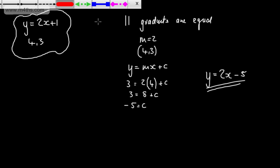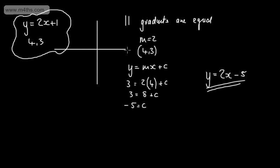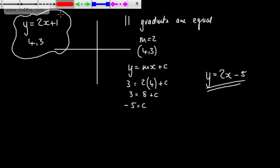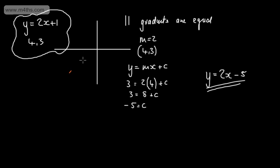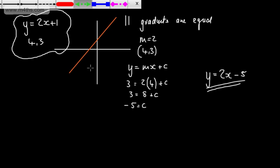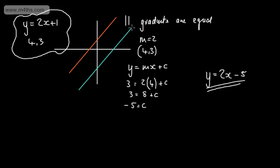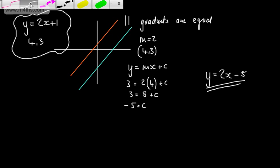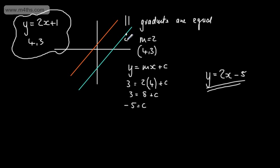If we graph this: y equals 2x plus 1 looks something like so, and y equals 2x minus 5 is a parallel line shifted down. The y-intercept of the first is (0, 1) and the second is (0, -5). We can see that the point (4, 3) lies on our new line, confirming that parallel lines have equal gradients.